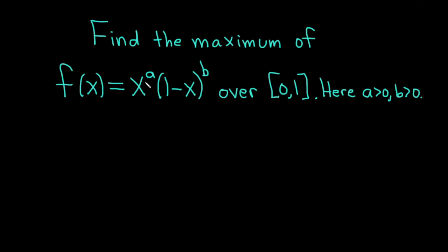In this video we're going to find the maximum of f(x) = x^a times (1 minus x)^b over the interval [0, 1], where a and b are both positive numbers. Let's go ahead and carefully work through this problem solution.